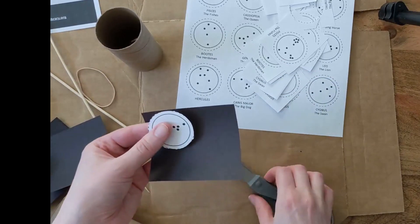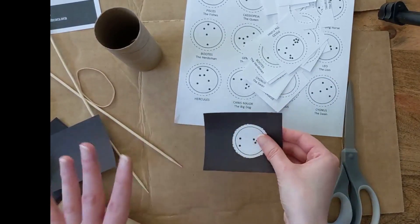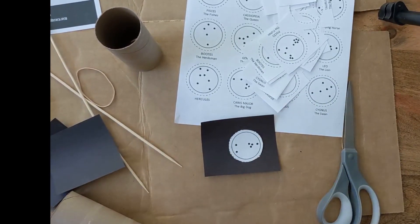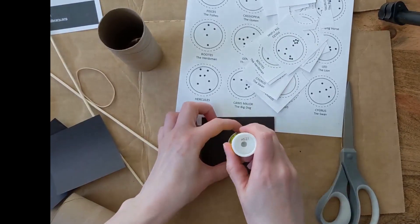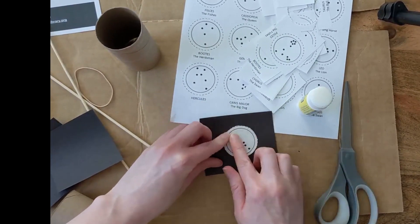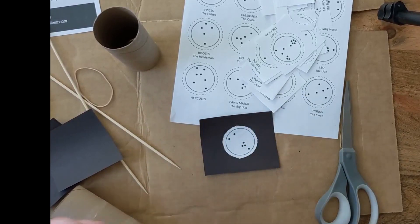And so because I'm using the construction paper, I'm going to glue it onto there. But if you're using aluminum foil, you want to glue it in there. I'm going to keep it as centered as possible.